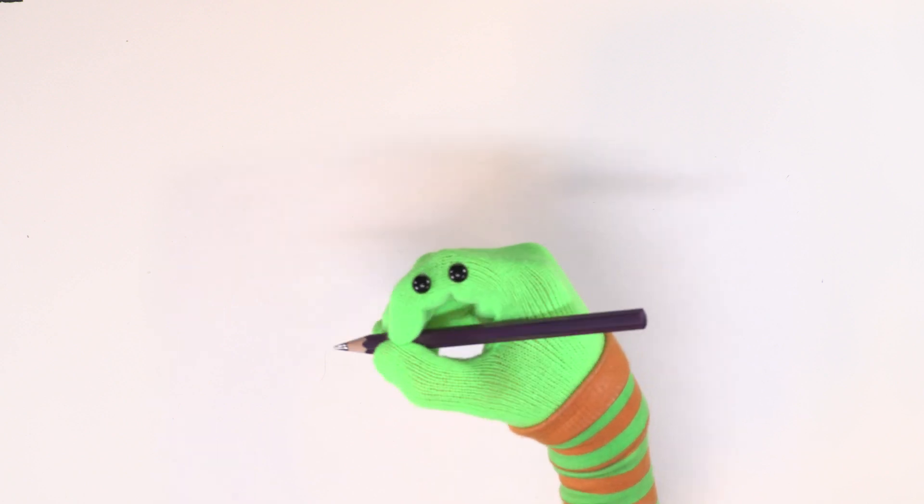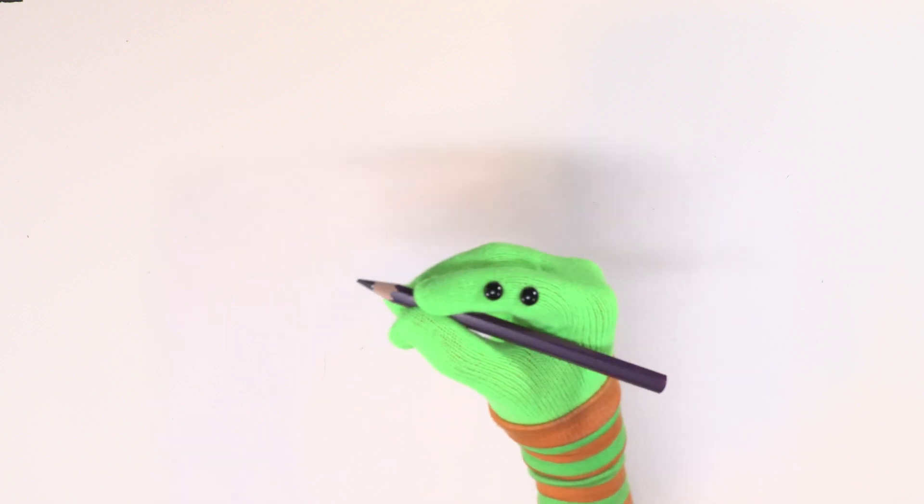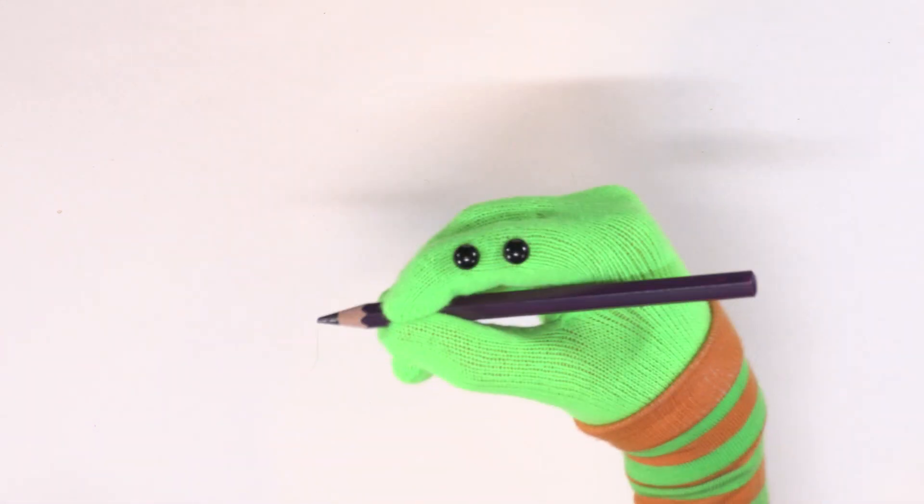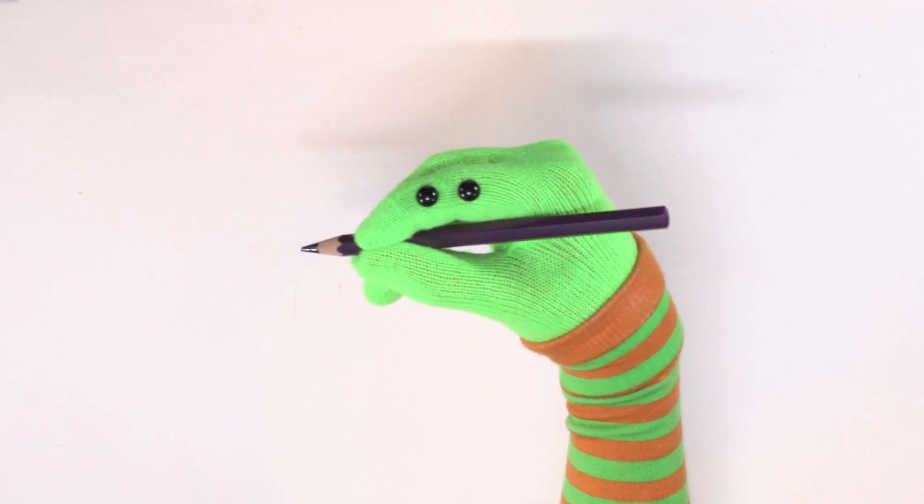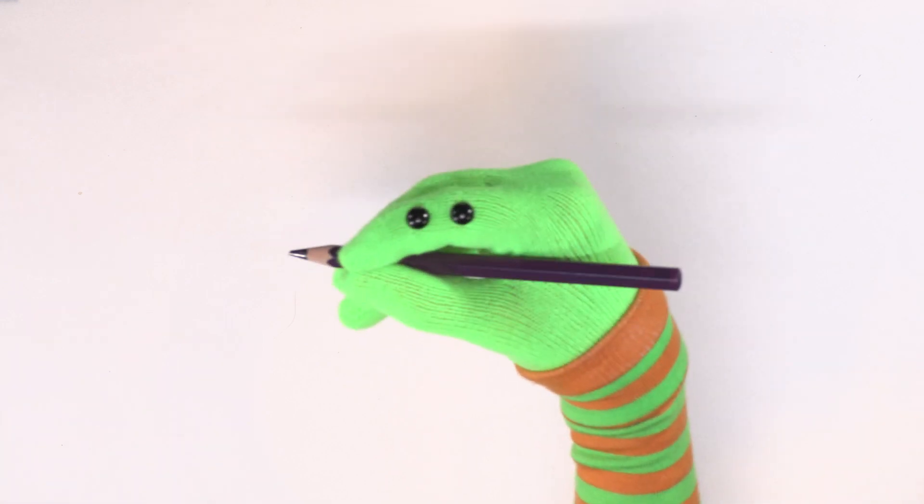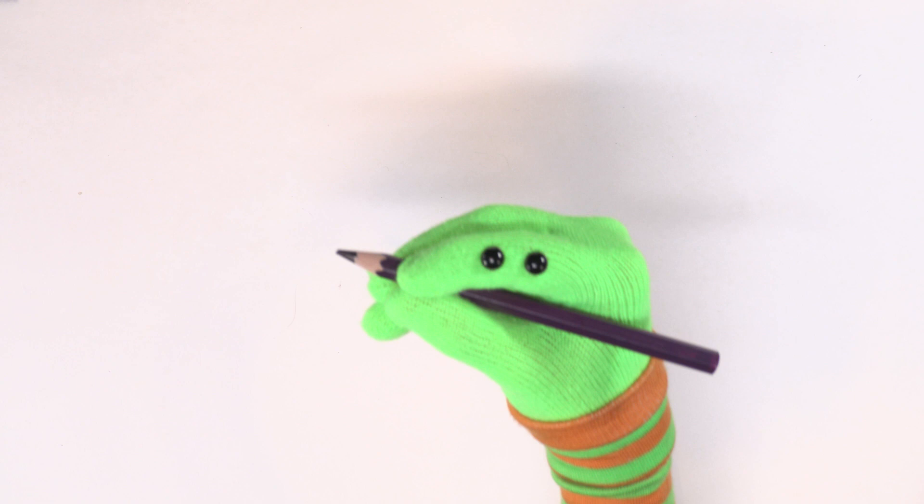While holding your pencil, make a circular motion with your arm. Not your wrist, Ziggy. You don't want to get dizzy. Use your whole arm this time so you get a complete circular motion.